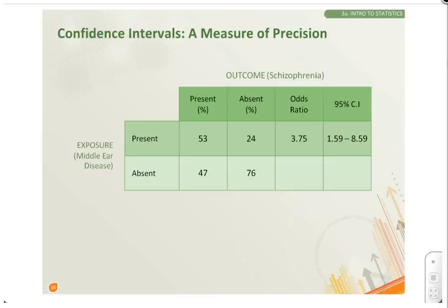The 95% confidence interval, or CI, is the most commonly used in hypothesis testing — that is, two standard deviations on either side of the observed value.